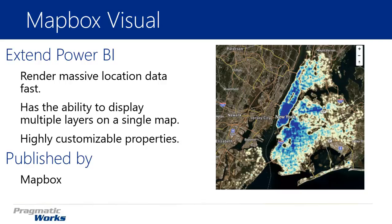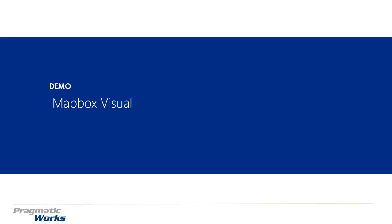It's also highly customizable. Once you get into working with the Mapbox Visual, there are quite a few properties you can tweak to show, highlight, and change the colors, or maybe make a dot more opaque. There's a lot of really cool features built into the customization section. In fact, there is a whole other set of map layers you can download from the Mapbox website and then import and use inside of Power BI. So let's go ahead and walk through how to use the Mapbox Visual.